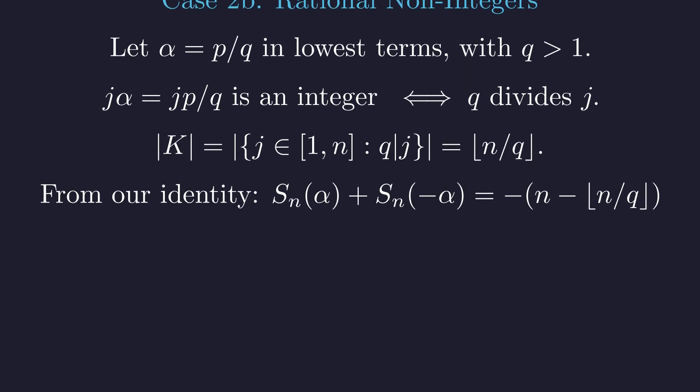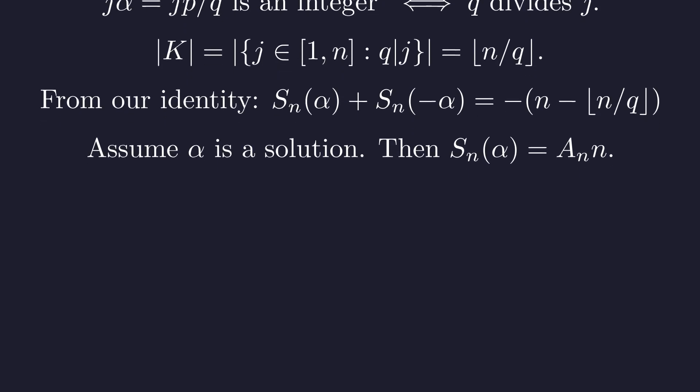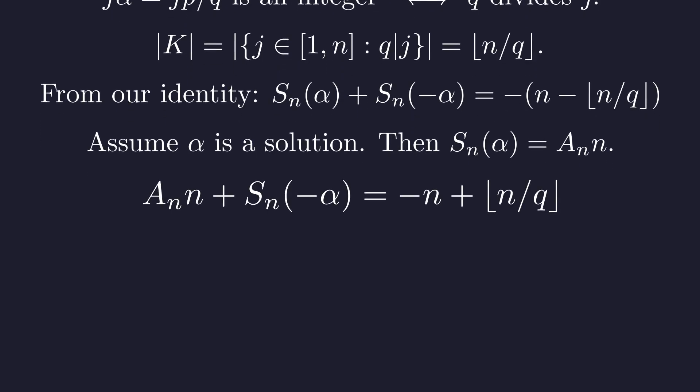Plugging this into our identity gives a specific formula for the rational case. Let's assume this rational alpha is a solution, meaning the sum is a multiple of n. Substituting this into the identity gives us this relation. Rearranging the terms shows that the floor of n over q is equal to s sub n of negative alpha plus a multiple of n. This implies that the floor of n over q and s sub n of negative alpha are congruent modulo n. While interesting, there is a more direct path, similar to the one we took for irrationals.